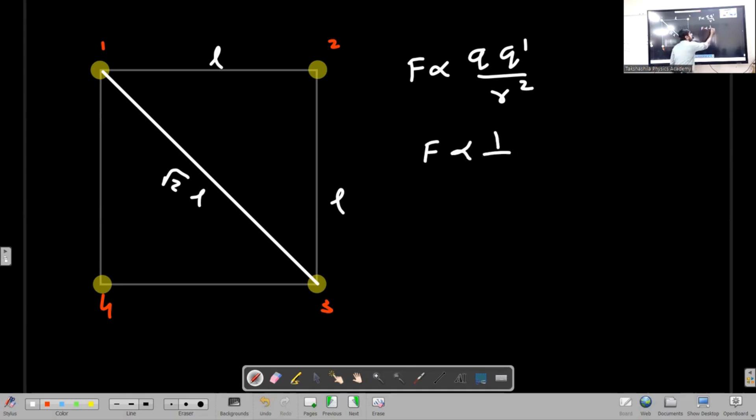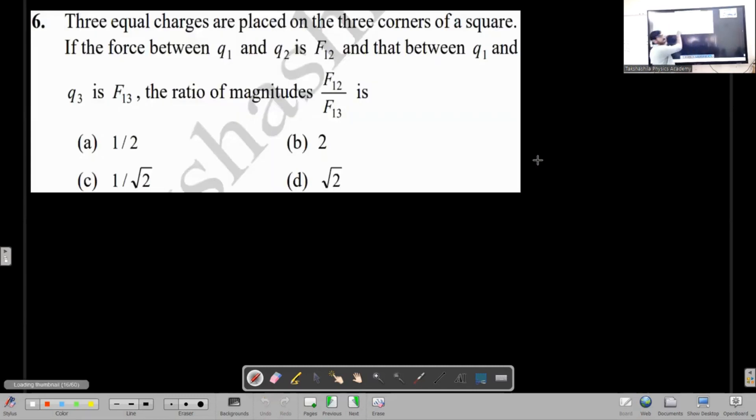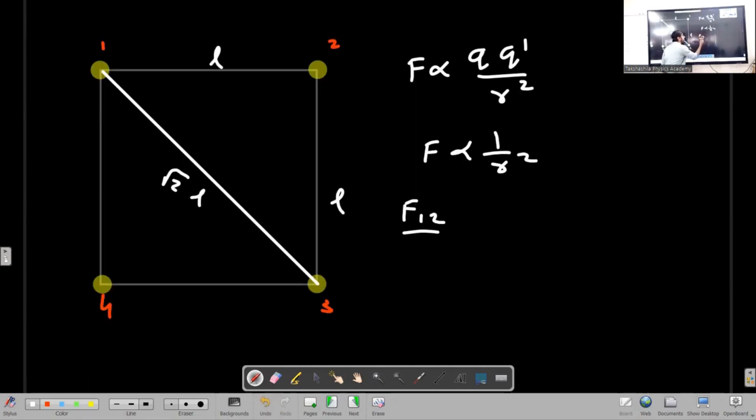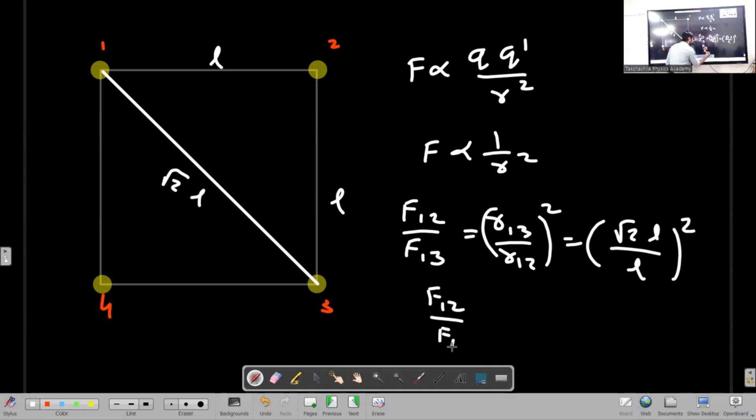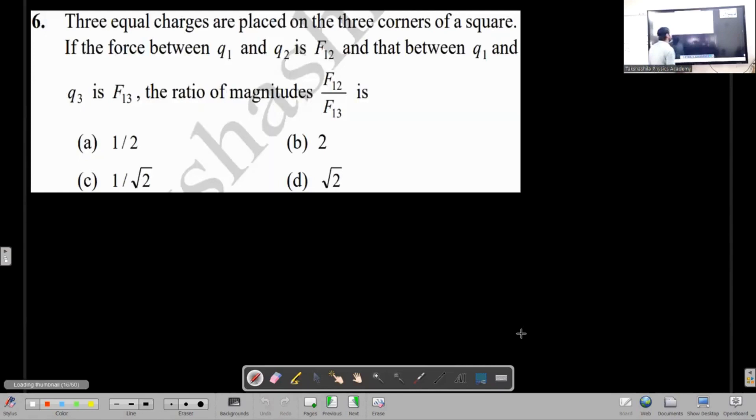It is only proportional to distance square, one upon distance square. F12 by F13 equals r13 upon r12 square. What is this between one and three? Root 2 l. Or what is this between one and two? l. And l cancels. What is root 2 square? Root 2 square is 2. Option number b.